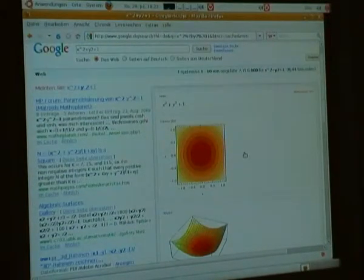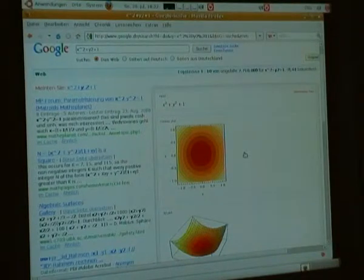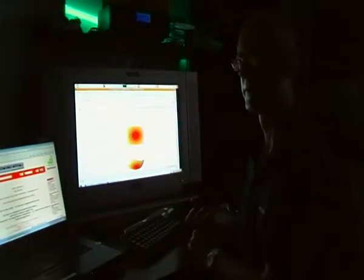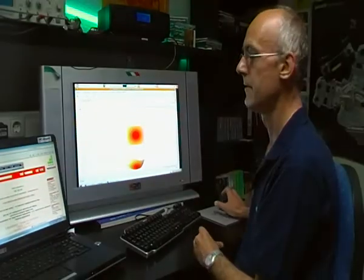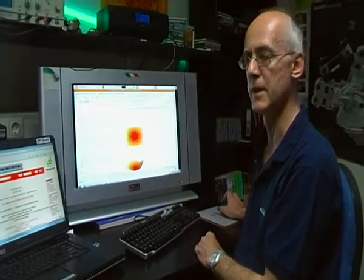So Wolfram Alpha and Google are not competitors. Google is the search engine. But Wolfram Alpha is a very precious add-on to get scientific-based information, more professional than on Wikipedia.